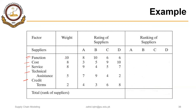For example, the first factor is given a weight of 10 out of 10, the second a weight of 8, and so on. It is recommended that the sum of weights be out of 100 so comparisons become straightforward. Then a rating is assigned to suppliers based on judgment, experience, and intuition. For the first factor, supplier A gets 8 out of 10, supplier B gets 10, supplier C gets 6, and supplier D gets 6. For the third factor of service, supplier A gets 9, B gets 4, then 5 and 7. The better a supplier is at a certain factor, the higher the score.